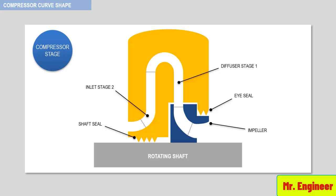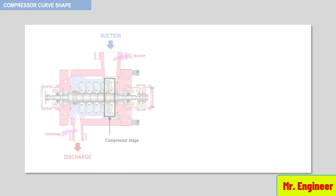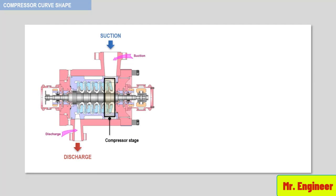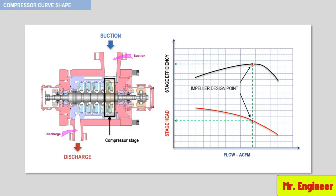Here you can see a simplified animation of the gas path inside the compressor stage. Each compressor stage, at a given flow and impeller speed, will produce a certain amount of head as illustrated here, and will have a specific stage efficiency. These two points are known as the impeller design point.